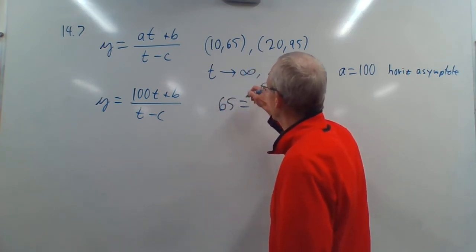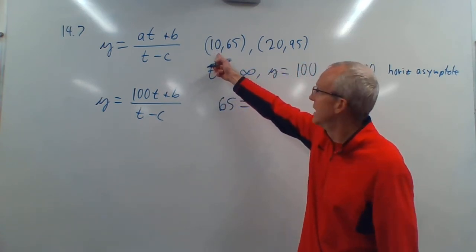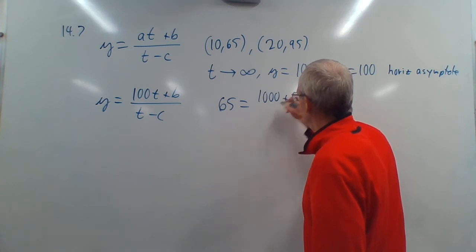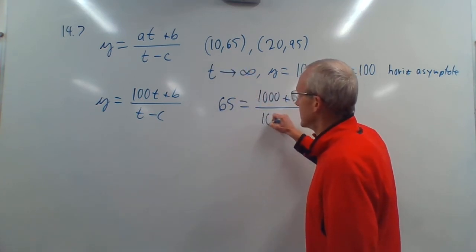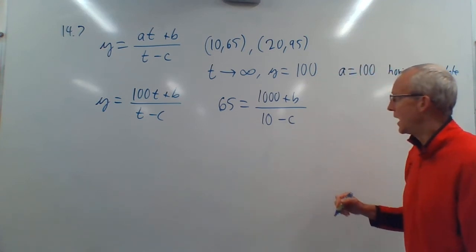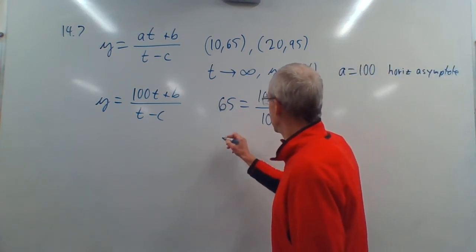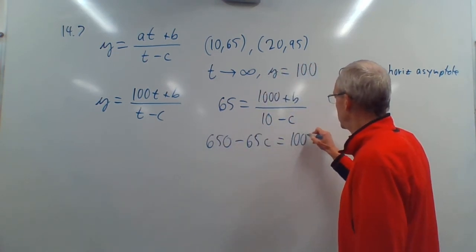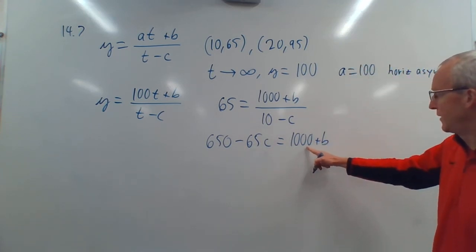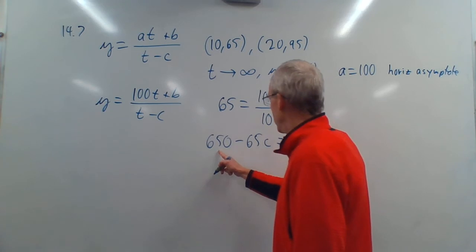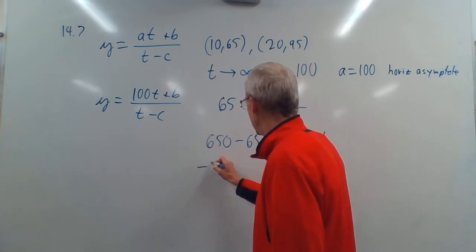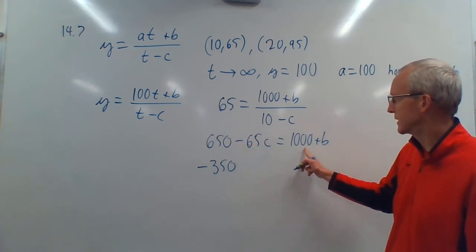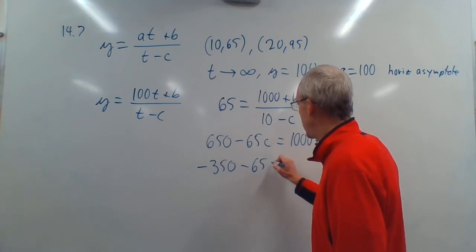Y is 65. So, one point is 65 is equal to, T is 10. So, 10 times 100 is 1,000. So, 1,000 plus B divided by X is 10, 10 minus C. Again, multiply both sides, 650 minus 65C is equal to 1,000 plus B. I would get the B by itself, put the minus 1,000 over there, so that would be negative 350. 650 minus 1,000 is negative 350, minus 65C is equal to B.